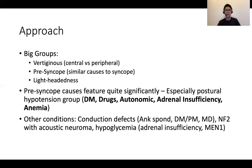Next, we move on to giddiness. The three big groups are: whether it's vertiginous, a presyncope kind of picture, or general lightheadedness that is not very well characterized. For vertiginous giddiness, I think about whether it's central or peripheral. If it's central, we think of cerebellar problems; if it's peripheral, we think of ENT problems.